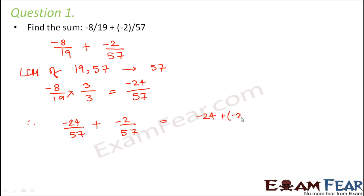Therefore, you can just add the numerator. So this would be -24 + (-2) divided by 57. This is equal to -26 divided by 57. So this would be the answer.